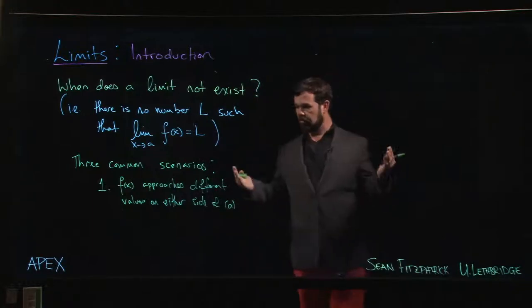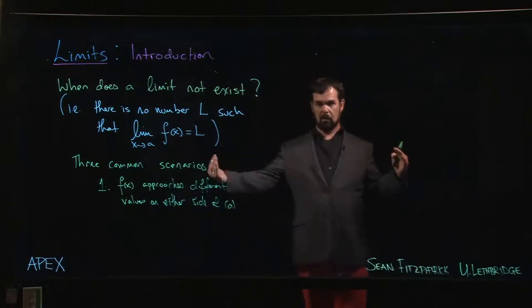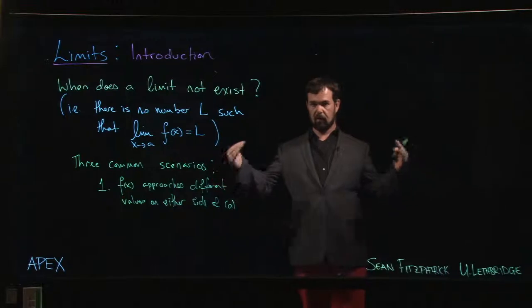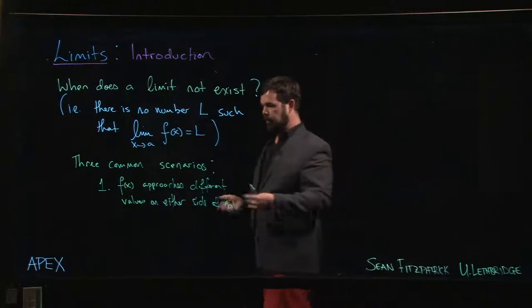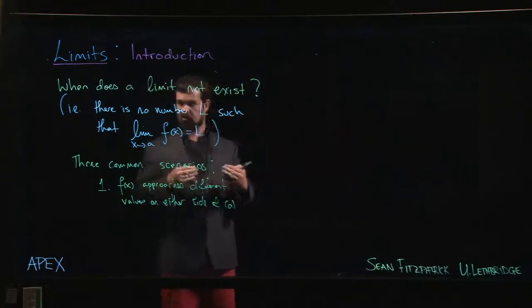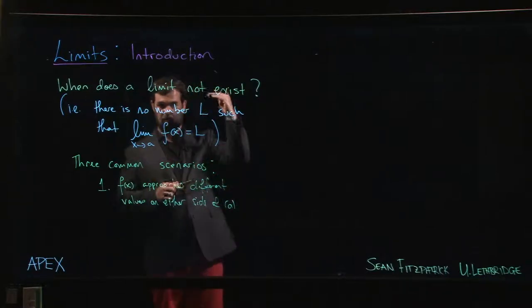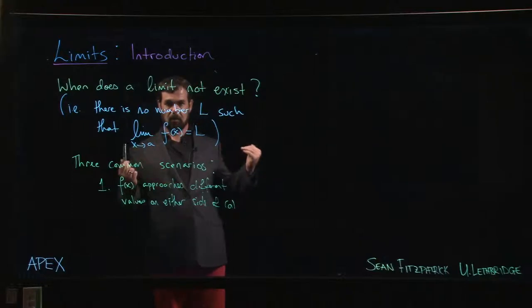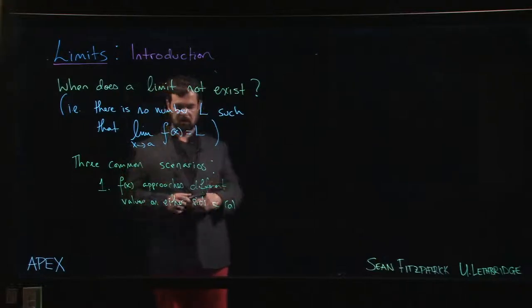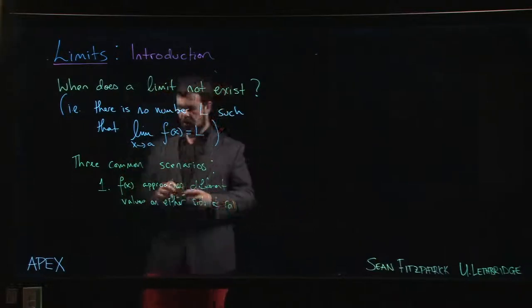We looked at a piecewise defined function where whether we looked on the left of 0 or the right of 0, we did find that the y values were coming together to the same y value. But if we had changed the definition for either of the two parts for that function, if we shifted one side up or down, then we would be seeing different y values on either side. That's one scenario where you don't get a limit.